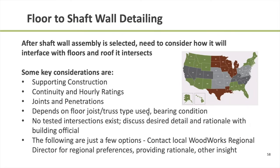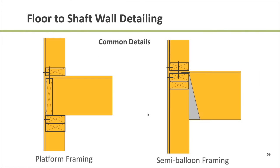Now we'll talk about the intersection detail of where a floor and a shaft wall meet — what are the unique considerations? This intersection of a rated floor to a rated wall is not something specifically addressed in the building code, so there will be some differences in how requirements are interpreted, applied, and enforced. At Woodworks, we have a team of 12 regional directors, each up to date on what shaft wall details have been accepted and are working successfully on projects. I would recommend getting in touch with your local Woodworks Regional Director to get a better feel for what details have been used successfully in your region.